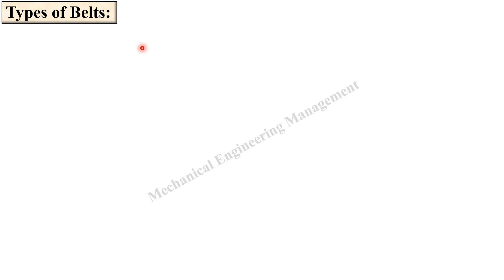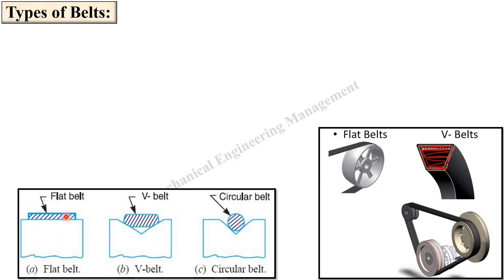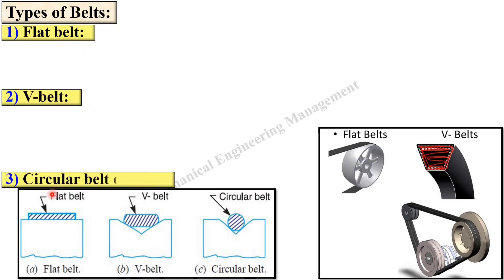Now let us see the types of belts. In this figure you can see there are three types of belts generally used: flat belt, V belt, and circular belt. The flat belt has a rectangular cross section, the V belt has a V-shape which is actually a trapezoidal cross section, and this figure shows a multiple-belt arrangement.